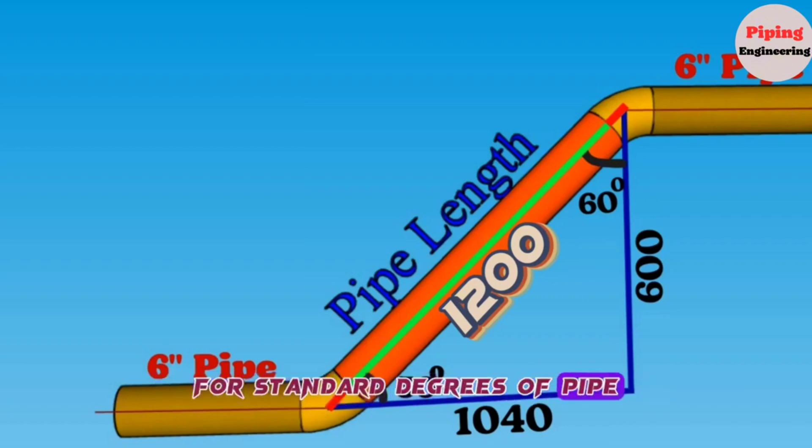For standard degrees of pipe elbows such as 45 degrees and 90 degrees, elbow center-to-end dimensions are available in standard pipe charts. But many times, custom elbow angles are required at site which should be cut from standard 45 degrees or 90 degrees elbows.